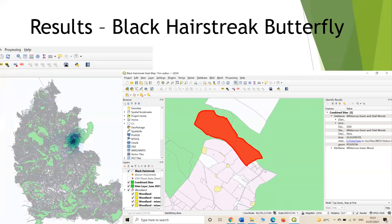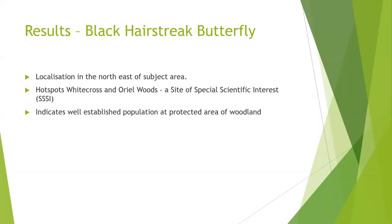On screen are the results for the black hairstreak butterfly. There's a quite high concentration in the north-east of Oxfordshire, and I identified this area as being White Cross Green and Oriel Woods. There's a really strong localisation in the north-east of the subject area, with a hotspot at White Cross and Oriel Woods, and these sites are a site of special scientific interest. This indicates that a well-established population is within a protected area of woodland, and that's a key message we will be seeing again later in the presentation.